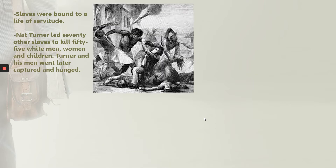Slaves were bound to a life of servitude. Nat Turner led 70 other slaves to kill 55 white men, women, and children. Turner and his men were later captured and hanged.